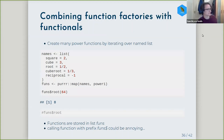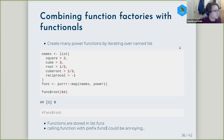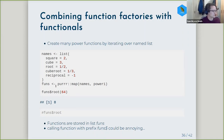Tying on from last week, you can combine function factories with functionals. The example provided in the textbook was: using these power examples, you could create multiple power functions at once by iterating over a named list. The created functions would be assigned to the names of the list, and the values would be used as the value for exponents. In this example, you'd iterate over this list and create a list of functions. So for example, if you wanted to call the root function, you'd need to access the list and provide the value that you want to square root.